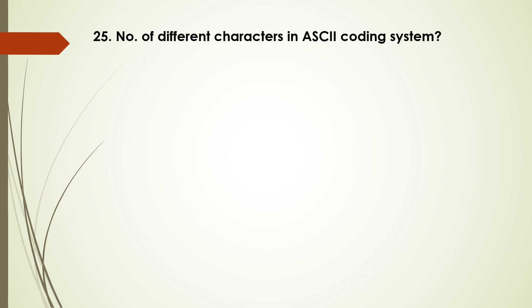Question number 25: Number of different characters in the ASCII coding system — options are: 256, 1024, 8, 2048. The answer is B, 1024.